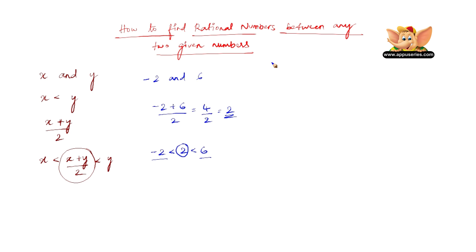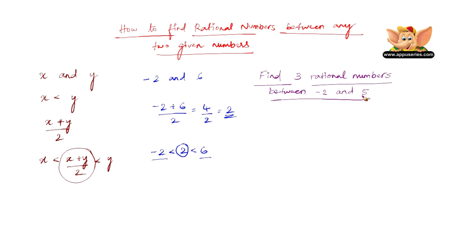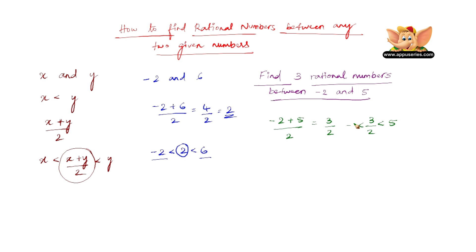Now let us go to another example, slightly different. Let us find three rational numbers between minus 2 and 5. Let us start by finding the first rational number. That rational number between minus 2 and 5 can be found by minus 2 plus 5 divided by 2, which is 3 by 2. So 3 by 2 is greater than minus 2 and less than 5, which makes 3 by 2 lie between minus 2 and 5.